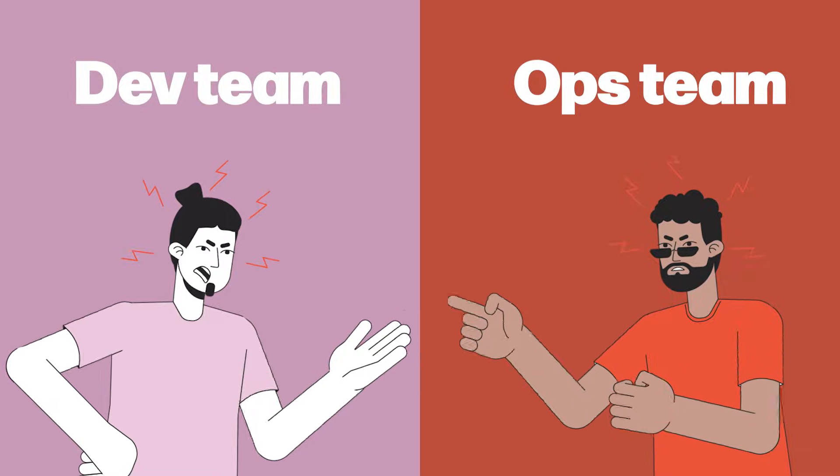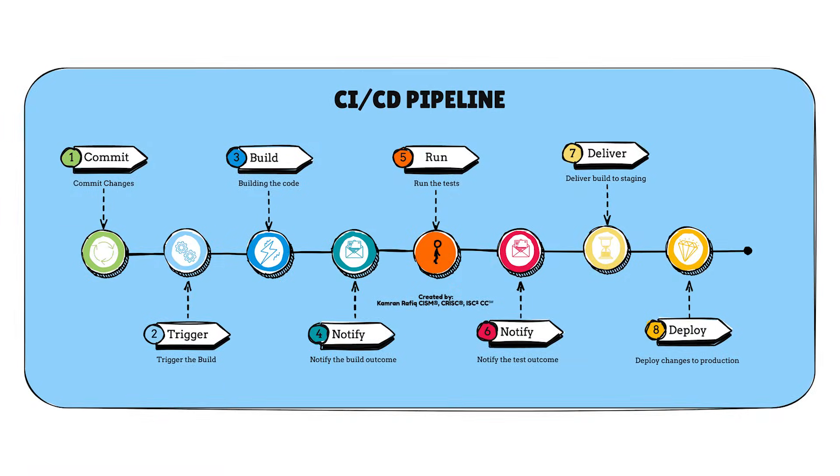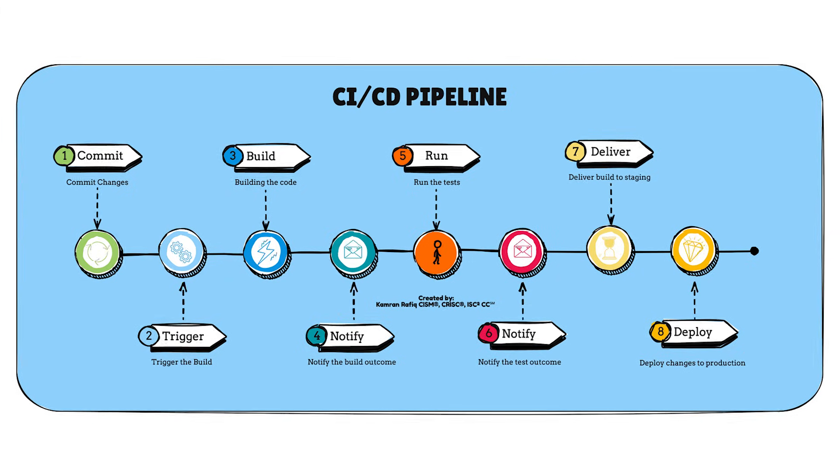Back in the day, Dev and Ops teams were like two siblings fighting over the TV remote. Developers wanted to ship features faster, Ops wanted stability — so chaos ensued. Then came DevOps, a culture that says let's work together. DevOps is all about automation, collaboration and tools like GitLab CI/CD, Jenkins, Docker and Kubernetes. The goal: break down silos, automate deployments and deliver value to users faster.